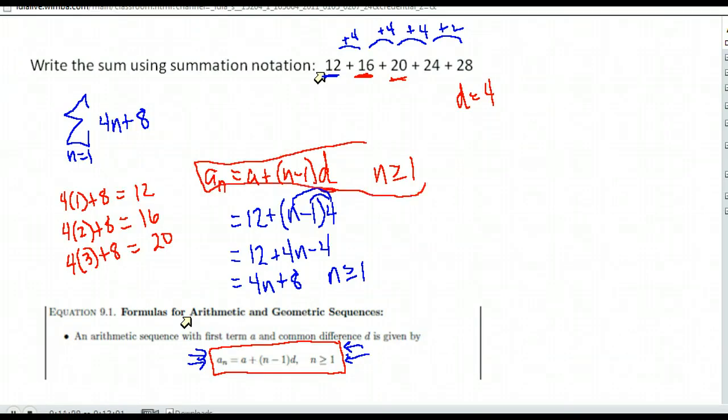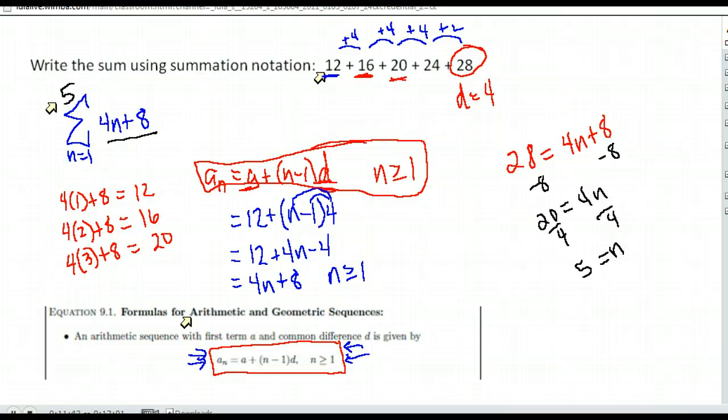We just used this formula given to us in our textbook, with a being the first term and d being the common difference, whatever the difference was between each set of terms. Now the only thing we need to know is what to put up here—where are we ending at? So we take our last term, 28, and we want to know what n we have for 4n plus 8 to be 28. If we just solve that, it'll give us the answer. If I subtract 8, I get 4n equals 20, and that tells me when n is 5. You could also just follow your little expression here until you get to it equaling 28. This sum written in summation notation is 4n plus 8 from n equals 1 to n equals 5.